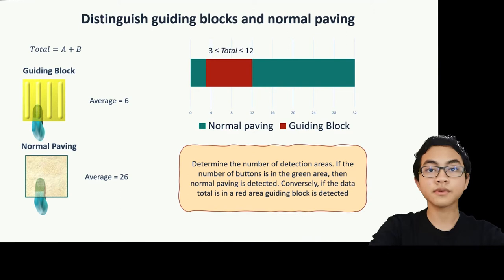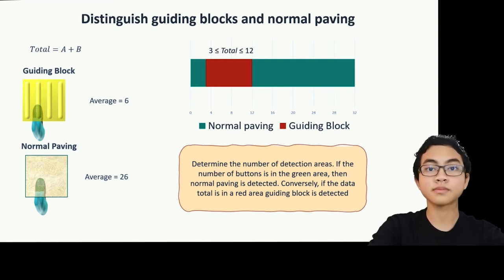After knowing the average number of buttons pressed on each type of paving, the next step is to determine the detection area. When stepping on the guiding block, the average number of buttons pressed is 6. Therefore, if the total buttons pressed is between 3 and 12, it can be said that a guiding block is detected. Apart from that, normal paving is detected.